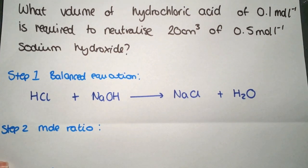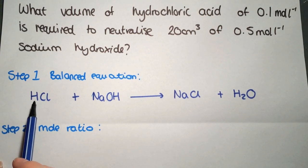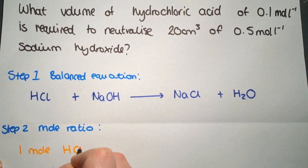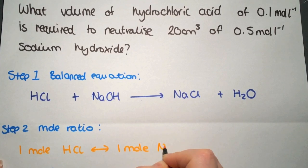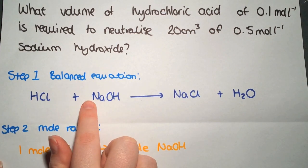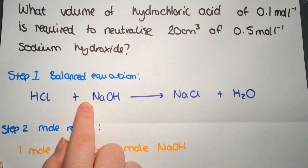The next step is to have a look at the mole ratio. We're only concentrating on the reactants — hydrochloric acid and sodium hydroxide. So we have a mole ratio of one mole of HCl to one mole of NaOH. The way I worked that out was from the numbers in front of the chemical formulae. There are no numbers, so we can assume there is one.